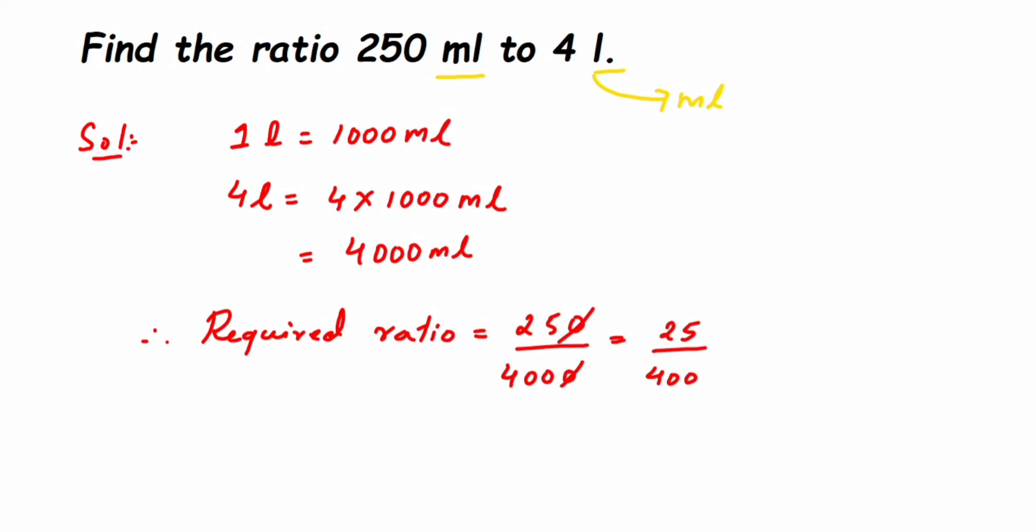Now this you can cancel in the 25 table directly, or you can cancel this in the 5 table. I'm going to go with the 5 table here. 5 times 5 is 25. Now we have 400, so 40 goes in the 5 table—5 times 8 is 40, and the 0 remains. So 5 upon 80.